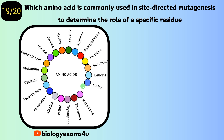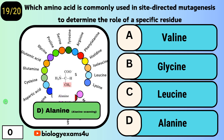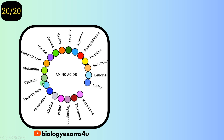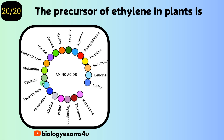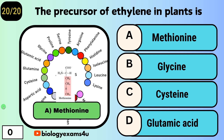Question number nineteen: which amino acid is commonly used in site-directed mutagenesis to determine the role of a specific residue? Option A, valine; option B, glycine; option C, leucine; option D, alanine. The answer is alanine — the process is called alanine scanning. Final question: the precursor of ethylene in plants is — option A, methionine; option B, glycine; option C, cysteine; option D, glutamic acid. The answer is methionine, which is a precursor of ethylene.